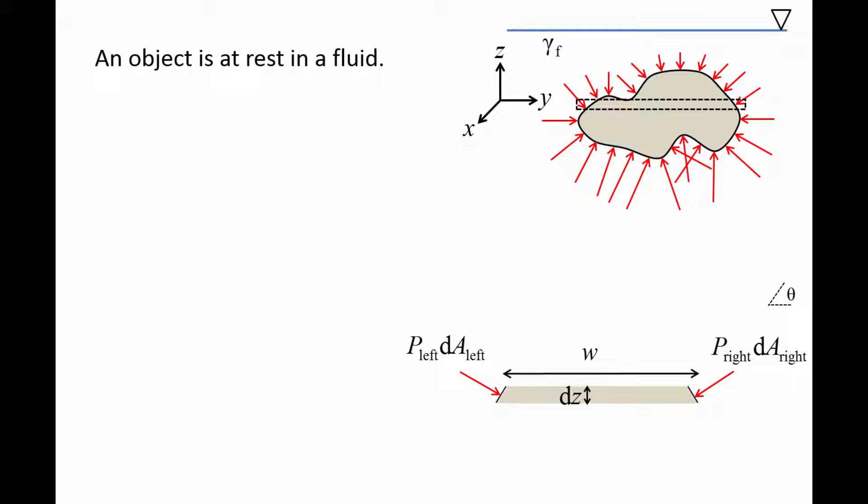The force on the left side of the sliver is equal to the pressure on the left side, p left, times the small area on the left side, dA left. The force on the right side of the sliver is equal to the pressure on the right side, p right, times the small area on the right side, dA right. The force vectors act normal to the surface and are oriented at an angle theta relative to the horizontal. In general, the orientation angles may be different for each side, which means the area on the left side may be different from the area on the right side. We will call the orientation angle on the left theta left, and the orientation angle on the right we will call theta right.